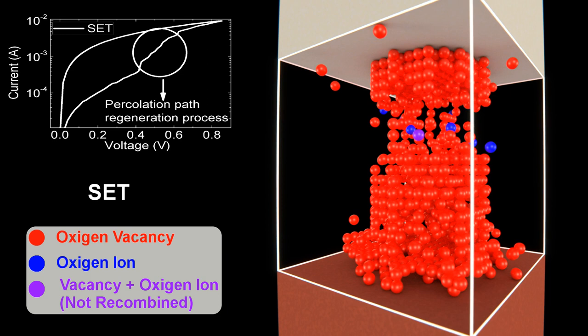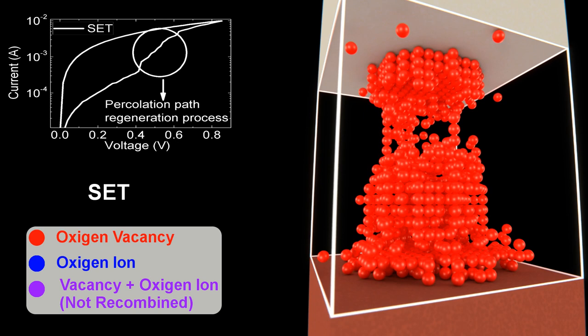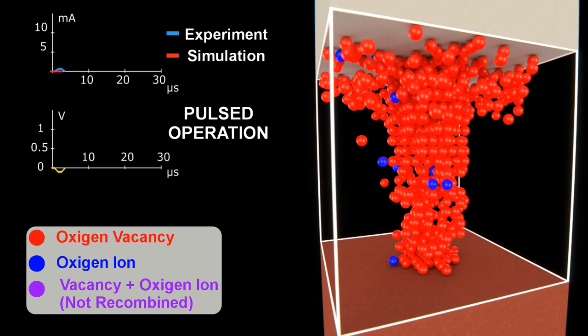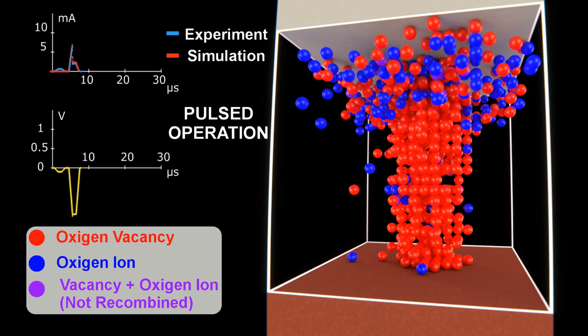We can also simulate the devices under pulsed input signals, as it is the case in memory circuits. Under this operation regime, resistive switching can also be obtained. See how the measured current is correctly reproduced with simulation results.